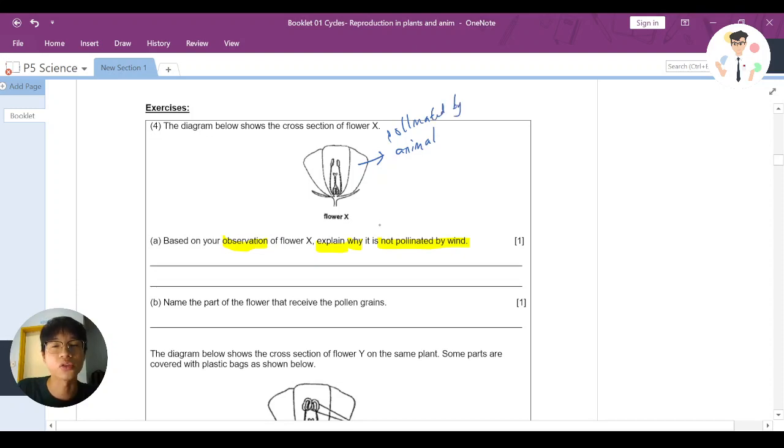But now they are asking why is it not pollinated by wind? From this perspective, you understand that if it needs to be wind pollinated, the flower will look different. If it needs to be pollinated by wind, the anther and the stigma should be sticking outside of the flower so that it's easier for the wind to carry.